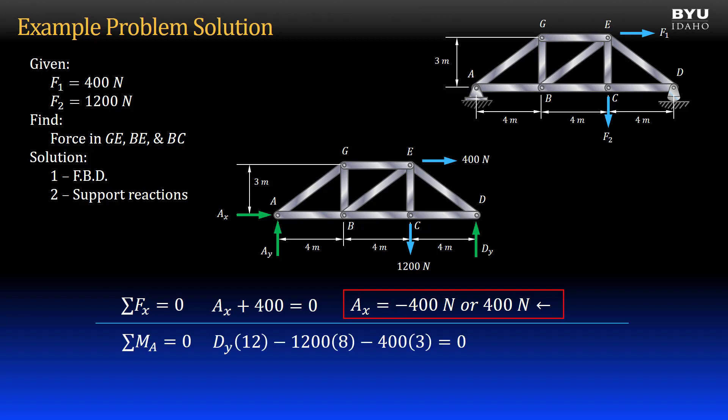Summing moments to zero about point A, we get that reaction Dy is 900 newtons, pointing upward.